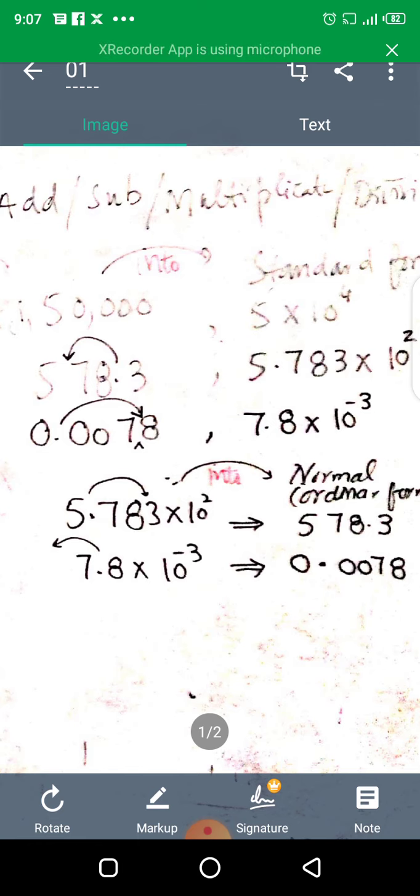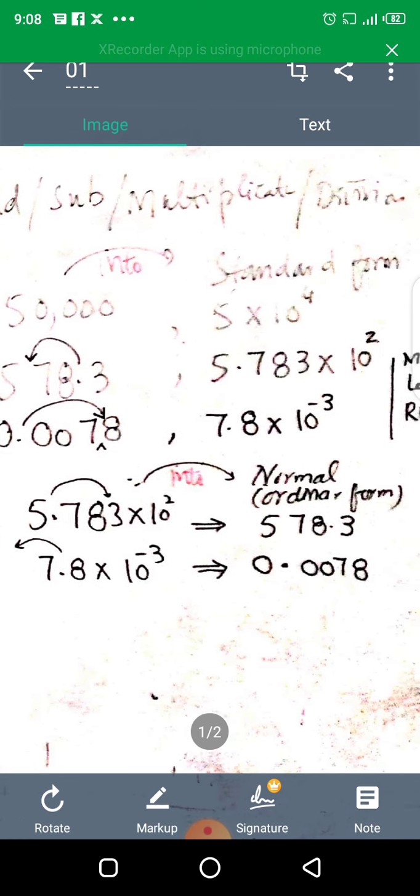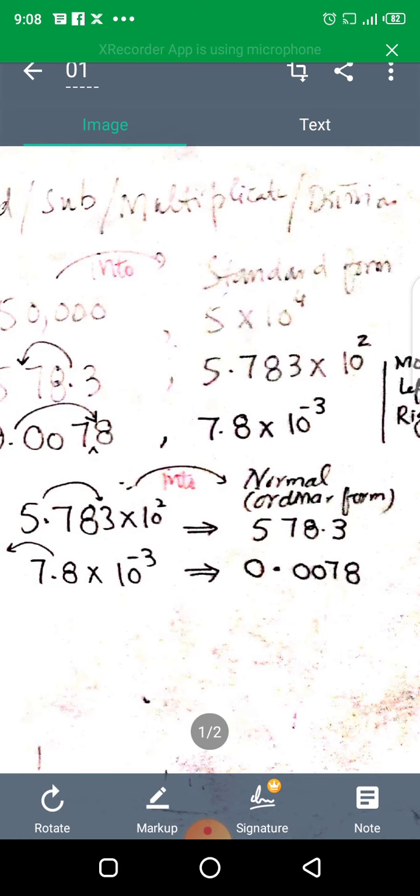With minus three, the value will be less than one. We have three digits left, so we move the decimal point three places to the left. So that will be 0.0078.